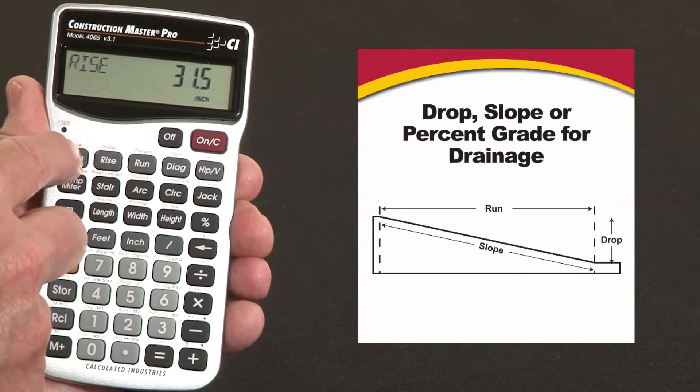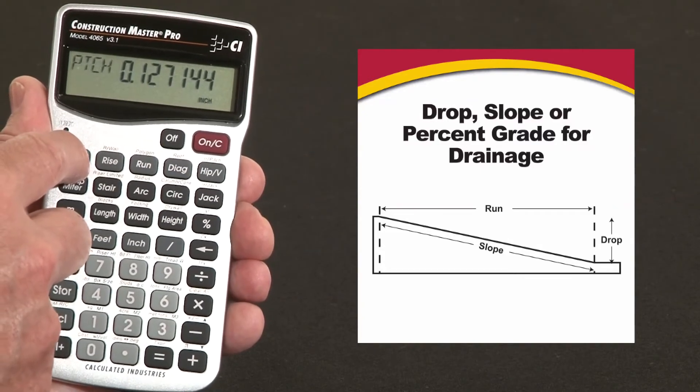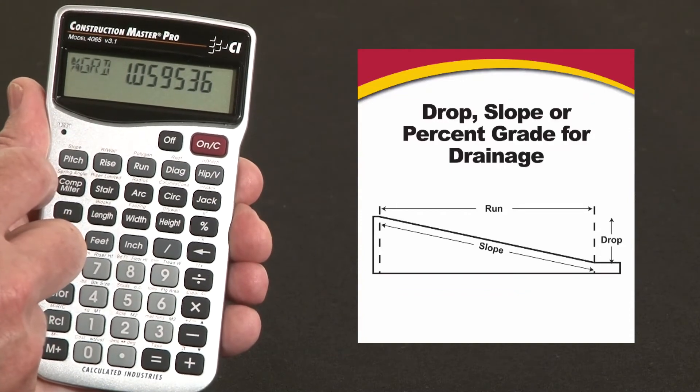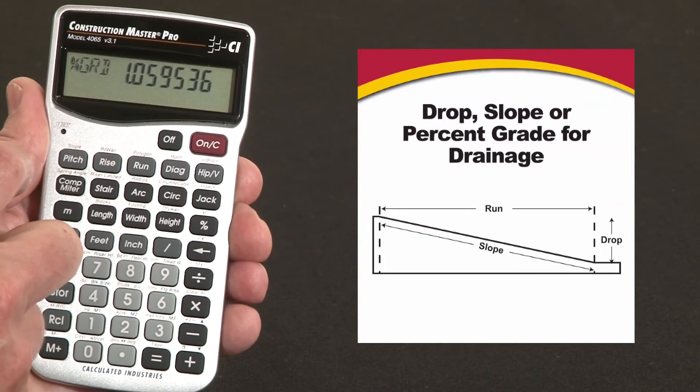Now we just calculate the pitch or percent grade. So there's the pitch - the degrees is 0.61 degrees, and it's a 1.06 percent grade.